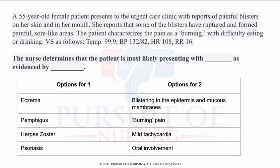Your options for the first blank are: eczema, pemphigus, herpes zoster, and psoriasis. Which do you think the patient is presenting with, and what is your evidence to support that diagnosis?